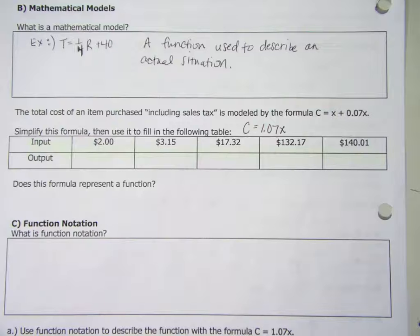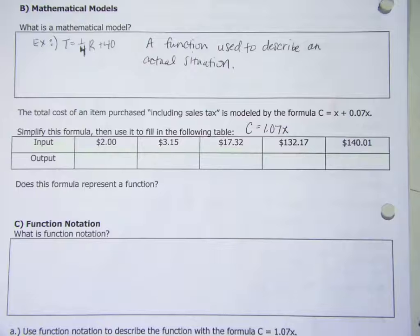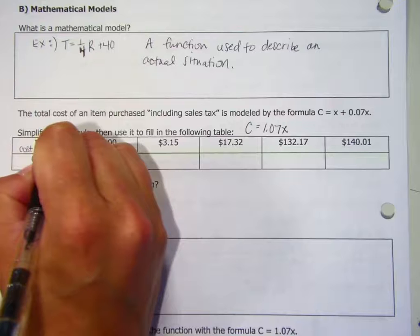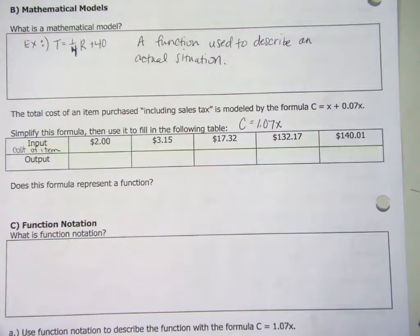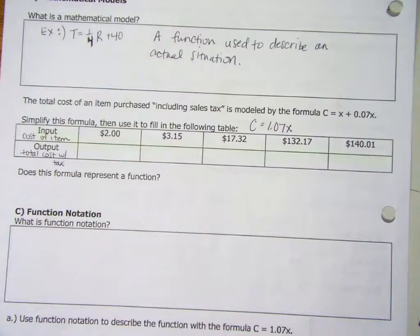When we look at our input and our output, the input here is the cost of the item, like the cost that's on the price tag. And then the output would be our total cost with tax. So what I want you guys to do, take two or three minutes. I want you to take those five input values and find each corresponding output. Find the total cost of those five items.